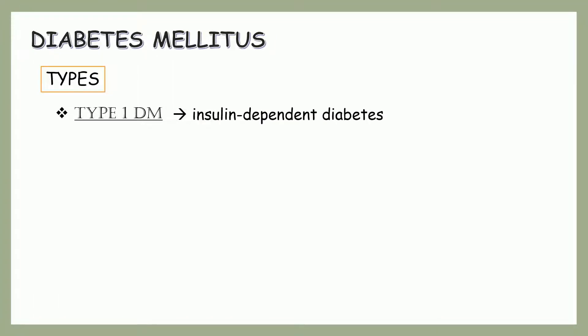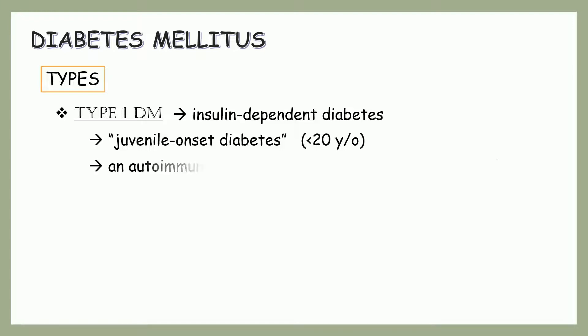Let's now proceed to types of DM. First, type 1 diabetes mellitus. It is insulin-dependent diabetes and is also called juvenile-onset diabetes because it often begins during childhood. It is the most common form of diabetes in people who are under 20 years of age. Type 1 DM is an autoimmune condition, which means your body attacks your pancreas, specifically the beta cells. This results in a lack or no insulin at all.